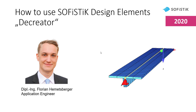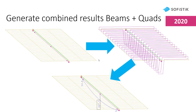Hello and welcome to this Sophistic tutorial. My name is Florian Hermetzberger and today I'm going to show you how to use design elements in Sophistic, based on my little example right here. As you can see, it consists of both quad elements as well as a beam element in the middle. We want to use design elements to combine and receive results for both quad elements and the beam element together, and also do a design based on the cross-section that we reference the design element on.